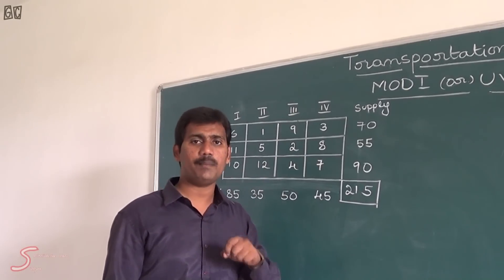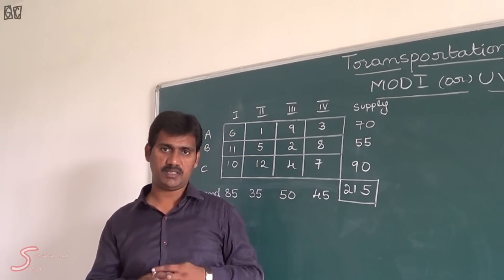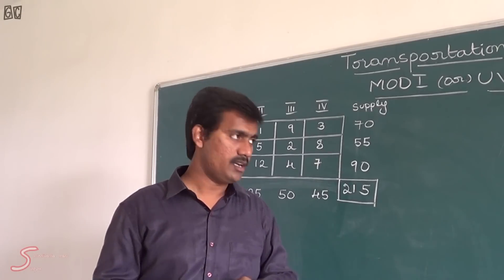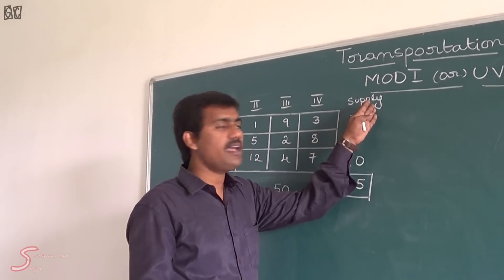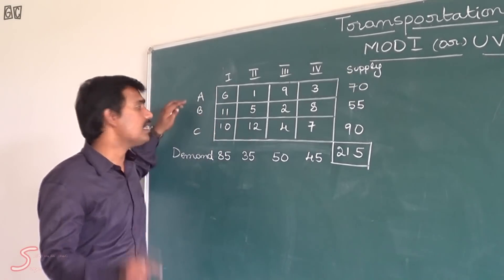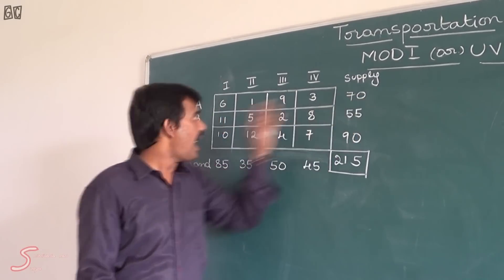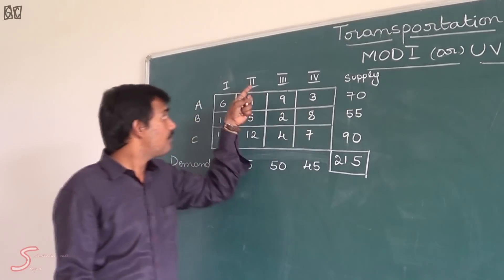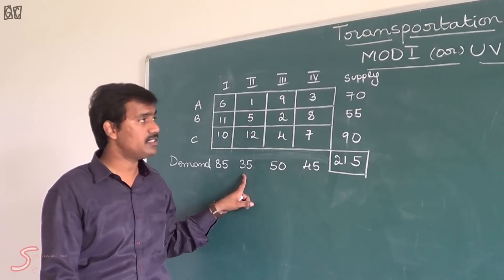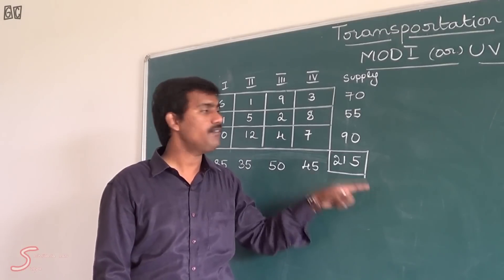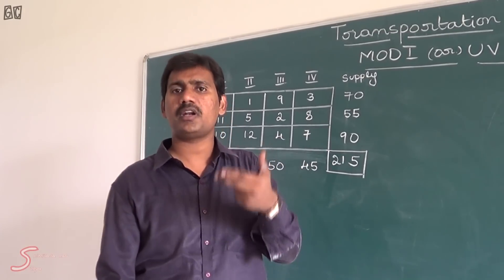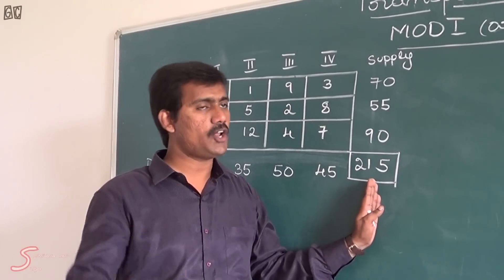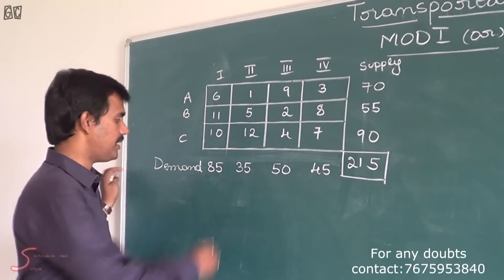First we are going to apply Vogel's Approximation Method, also called the penalty method. For LPP the penalty means the Big-M method; for transportation, penalty means Vogel's Approximation Method. Before going to that, first we have to check if supply equals demand — that is, whether it is balanced. In this case, the total supply is 215 and the total demand is also 215, so it is balanced.